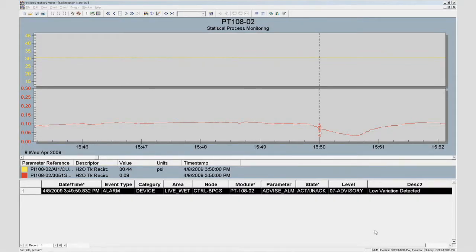The process engineers that need to investigate this further can use the Process History View application. As you can see, the PlantWeb Alert information is clearly labeled with the historical information of this device.